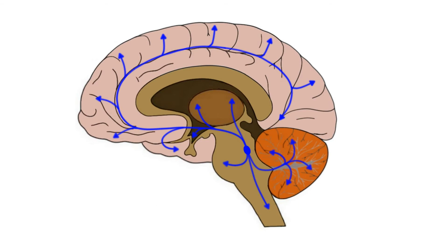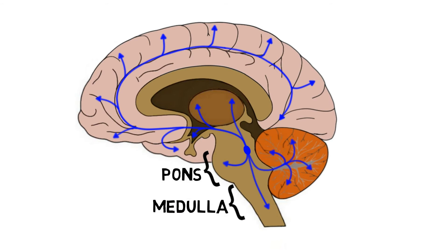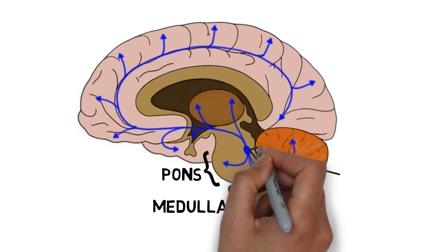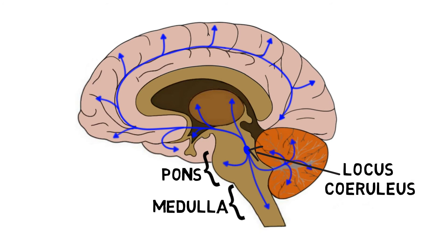Norepinephrine-producing neurons in the central nervous system are primarily concentrated in the pons and medulla. The most prominent of these groups of neurons is a nucleus called the locus coeruleus, which is the main site of norepinephrine production for the central nervous system.